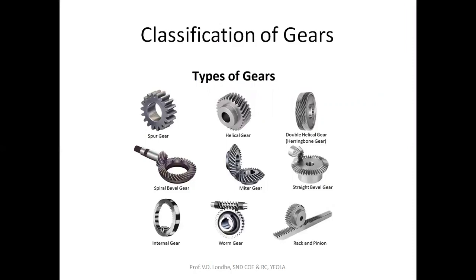Gears are classified as per their shape, size, their profiles, and second, depending upon the position of their axis. As we know, in a gear pair one is the pinion and another one is the gear, and both of them are mounted on individual shafts. Spur gear, helical gear, and herringbone gear — all these gears come under the category of parallel axis position for the shaft.